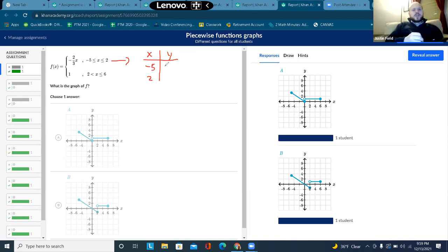So then I'll just substitute negative 2 thirds times negative 5. That would be positive 10 over 3, or approximately 3.3 repeating. And then negative 2 thirds times 2 is negative 4 thirds, or approximately negative 1.3 repeating. So then I want to look for the graph that has the points negative 5, 3.3, and also 2, negative 1.3.